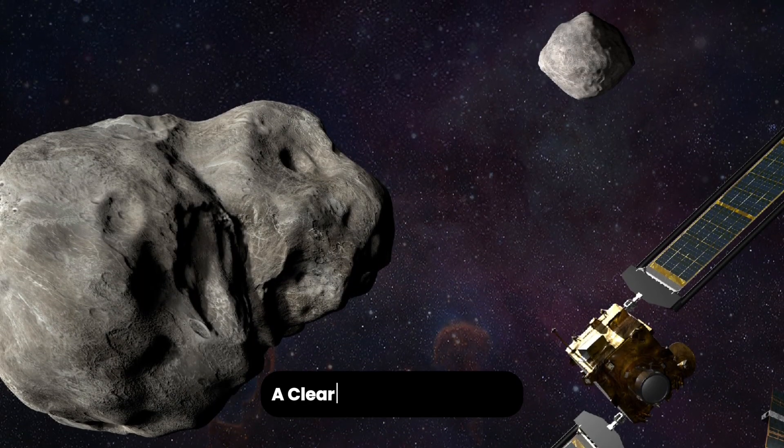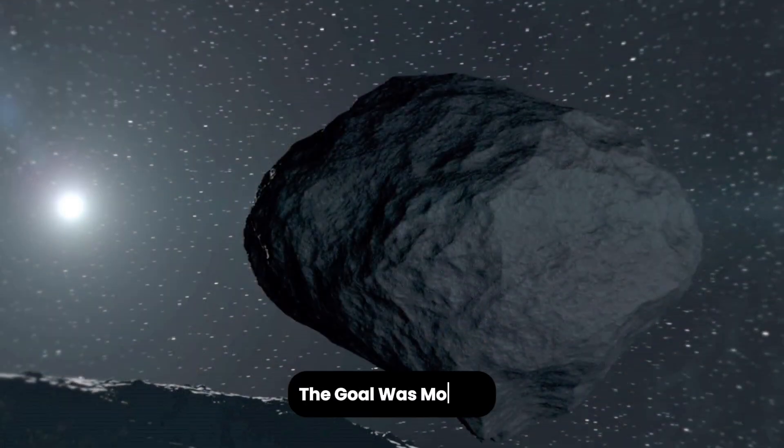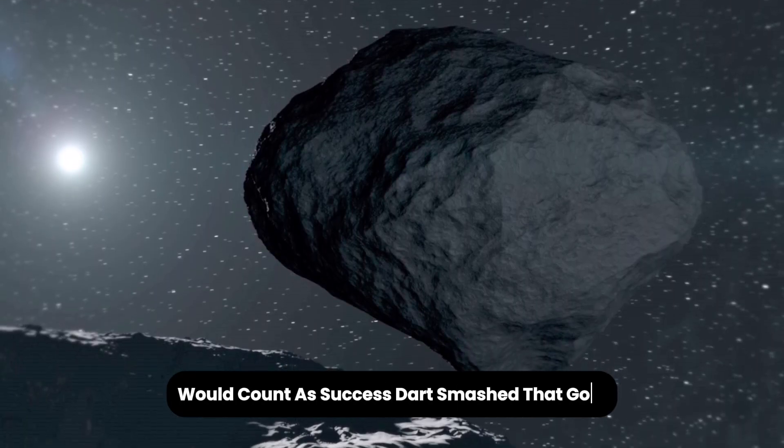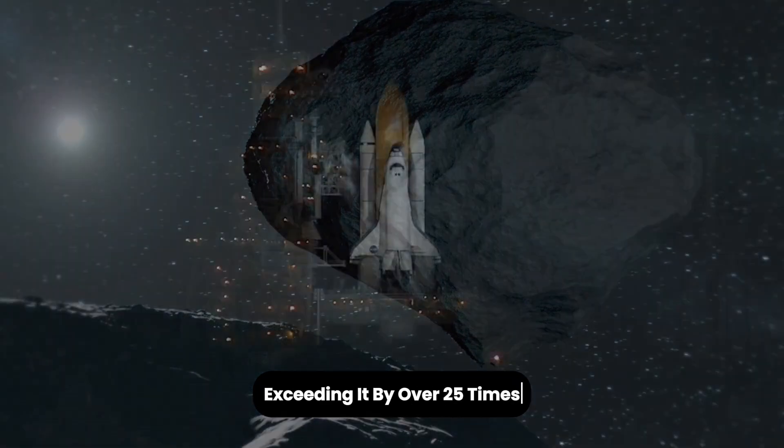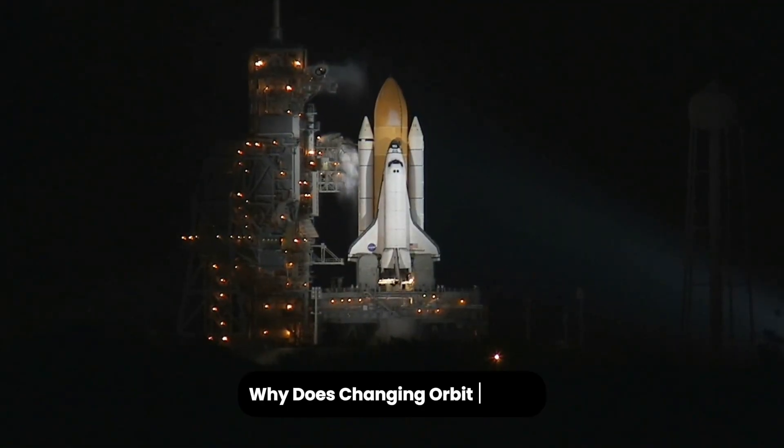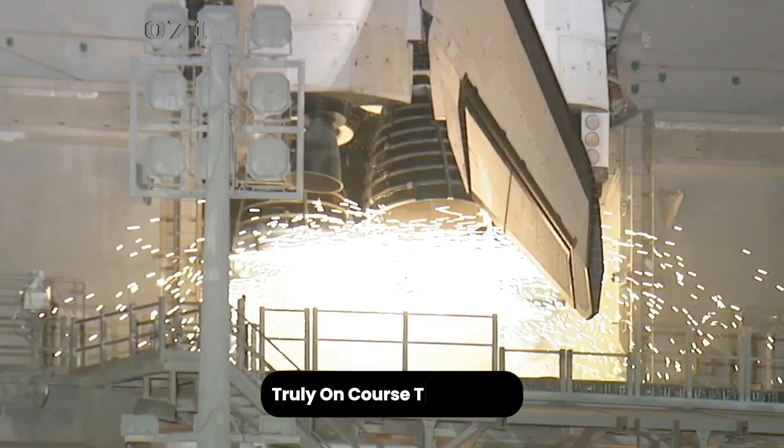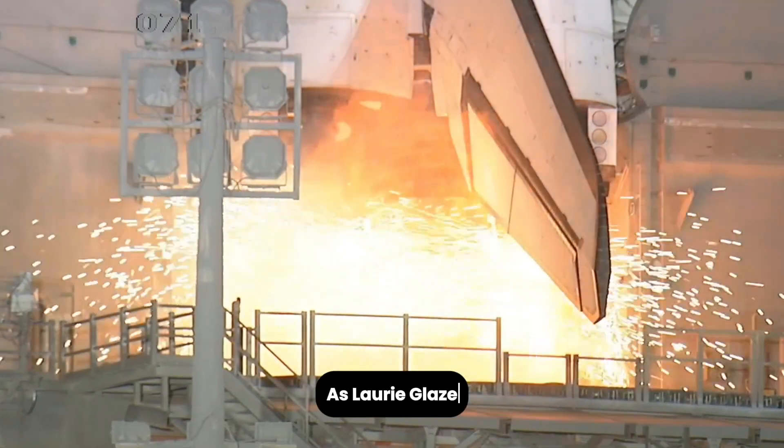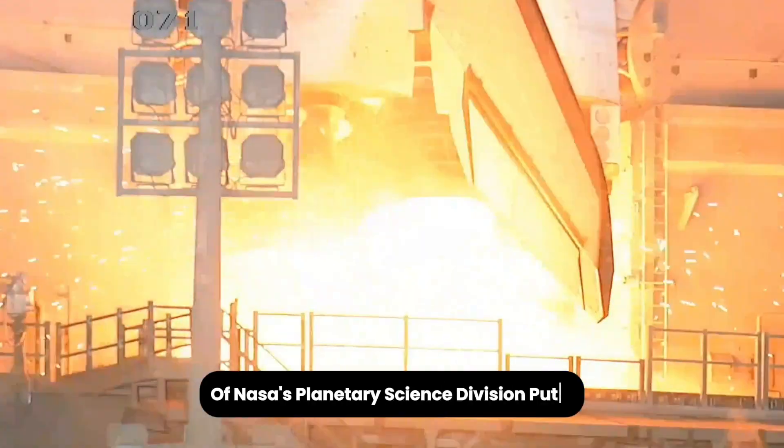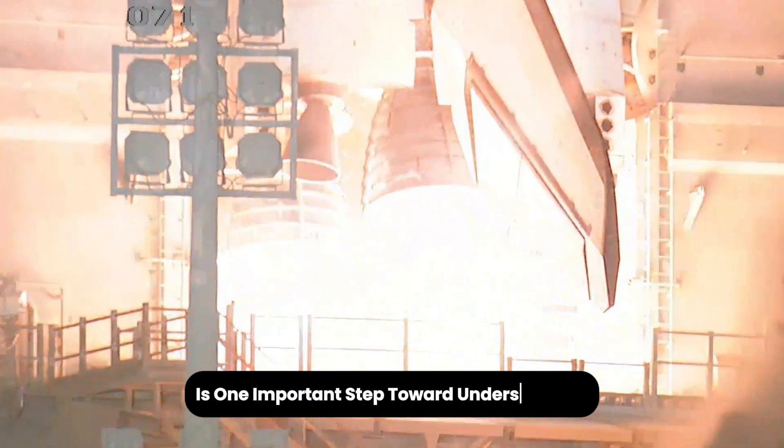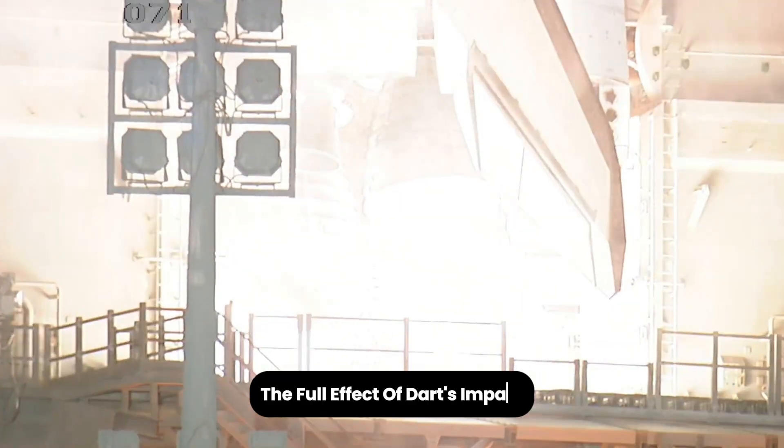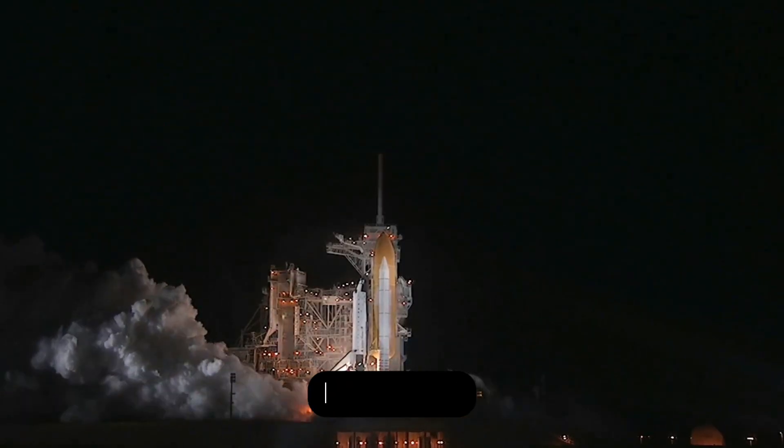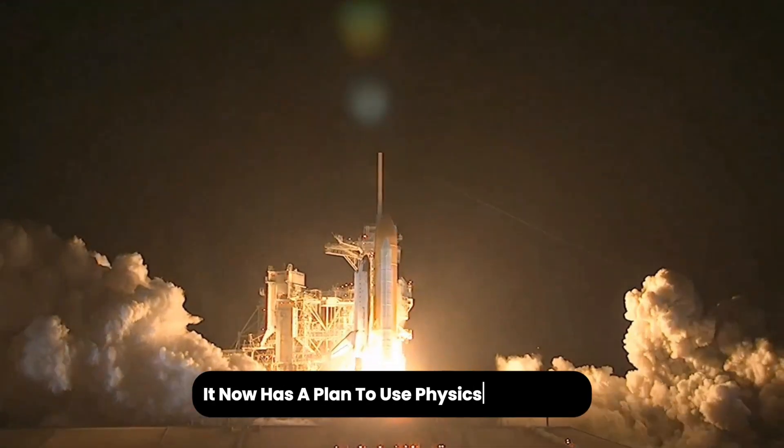A clear measure of success. The goal was modest, even a 73-second change in the orbit would count as success. DART smashed that goal, exceeding it by over 25 times. Why does changing orbit matter? If we ever found an asteroid truly on course to hit Earth, nudging its motion even a little bit could send it safely past. As Lori Glaze of NASA's Planetary Science Division put it, this result is one important step toward understanding the full effect of DART's impact and showing how such a mission could protect Earth. In short, it worked. And Earth knows it now has a plan to use physics as a shield.